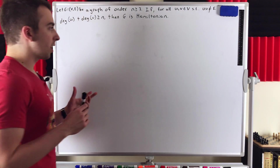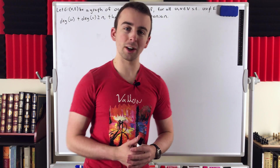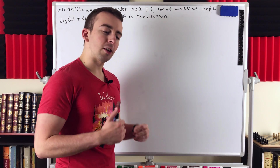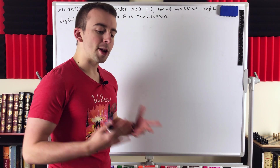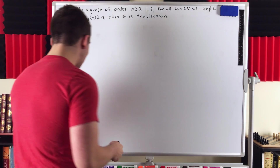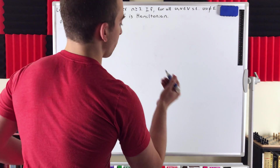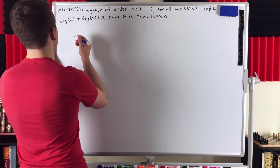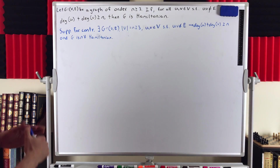For this proof, we're going to use a very powerful proof technique: proof by contradiction — one of my favorites. It sort of lets us start off the proof with some free extra information. So let's go ahead and write out our contradiction assumption. I'm going to use some abbreviations here to help us fit everything on the whiteboard.